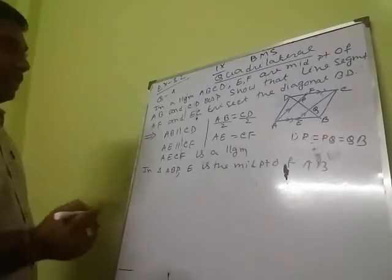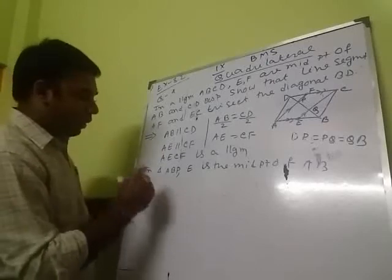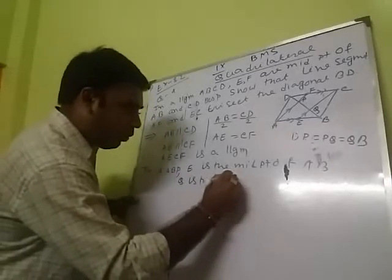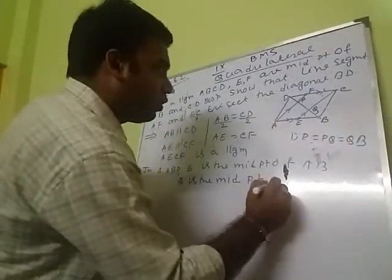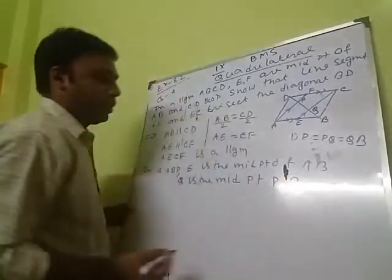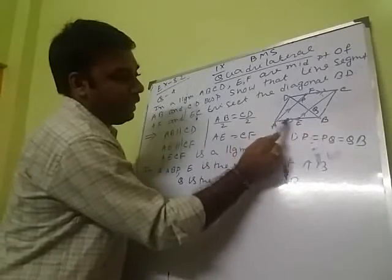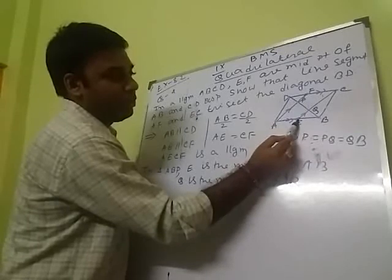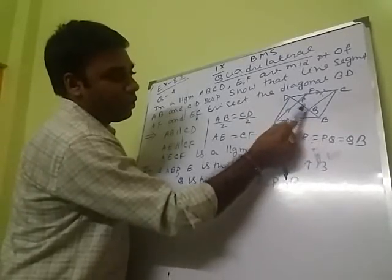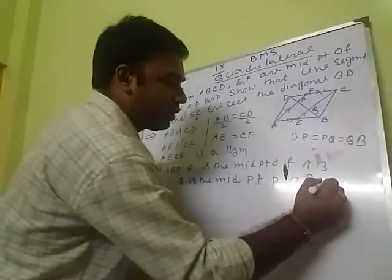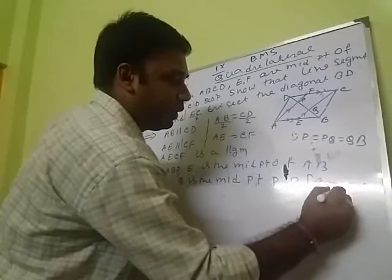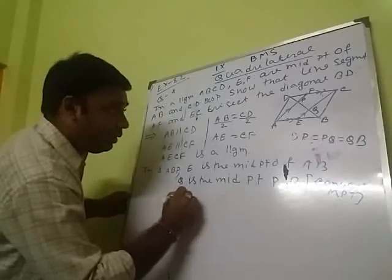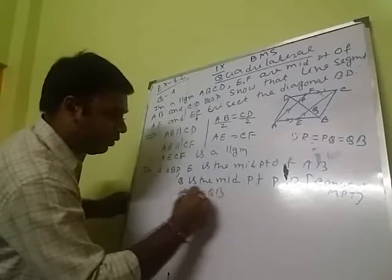By the converse midpoint theorem, since E is the midpoint of AB and EQ is parallel to AP, Q is the midpoint of PB. Therefore PQ equals QB.